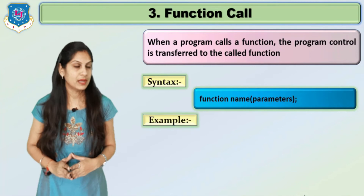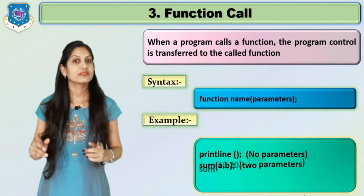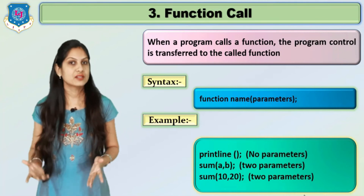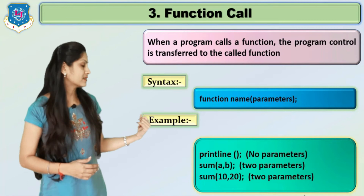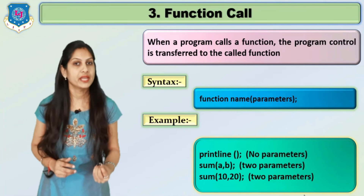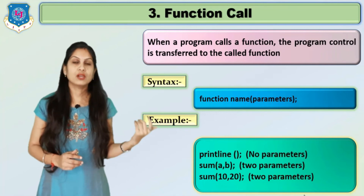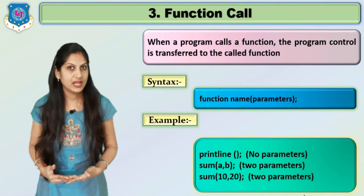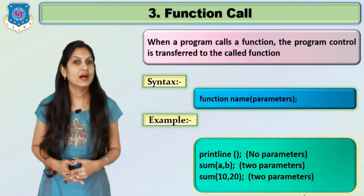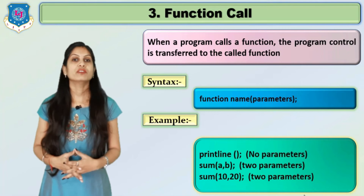Examples of function calls: first, 'printLine()' — function name with empty brackets, indicating no parameters. Second, 'sum(a, b)' — passing two variable names. Third, 'sum(10, 20)' — passing constant values instead of variables. As per your need, you can write any of these function call styles.